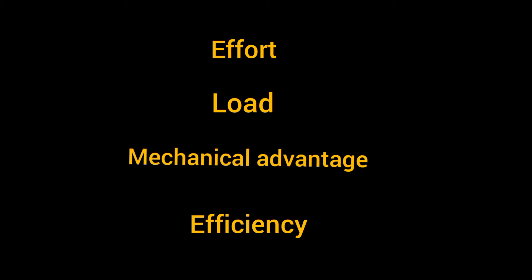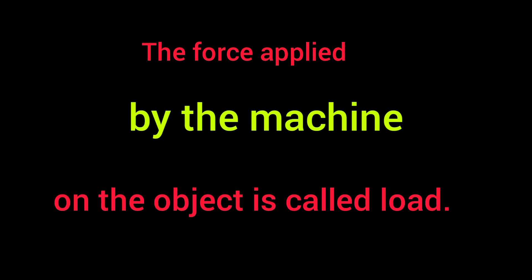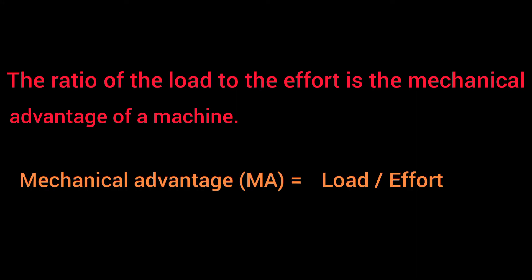The first term is effort. The force applied on the machine to do some work is called effort. The force applied by the machine on the object is called load. The ratio of the load to the effort is the mechanical advantage of a machine. That is, mechanical advantage MA is equal to load divided by effort.